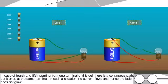In case of fourth and fifth, starting from one terminal of this cell, there is a continuous path but it ends at the same terminal. In such a situation, no current flows and hence the bulb does not glow.